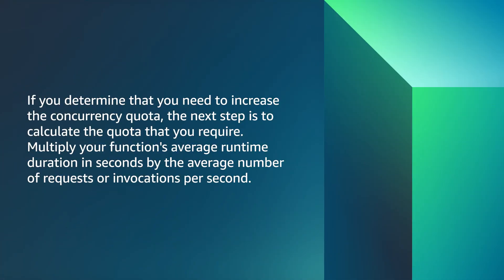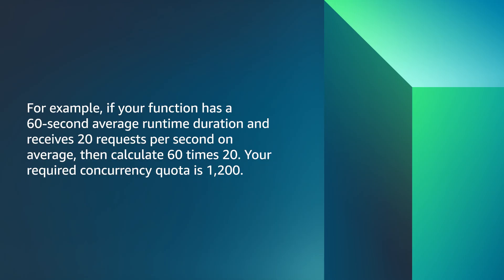If you determine that you need to increase the concurrency quota, the next step is to calculate the quota that you require. Multiply your function's average runtime duration in seconds by the average number of requests or invocations per second. For example, if your function has a 60-second average runtime duration and receives 20 requests per second on average, then calculate 60 times 20. Your required concurrency quota is 1,200.